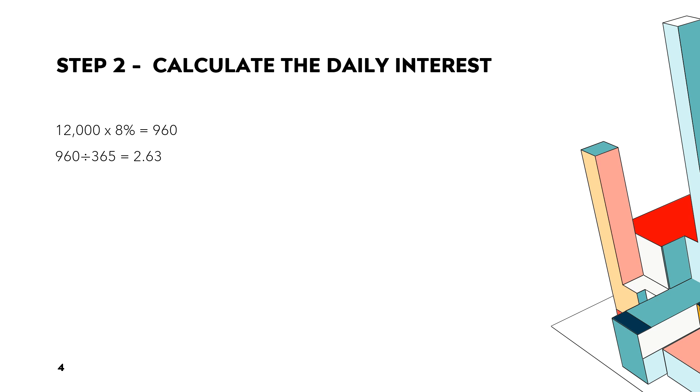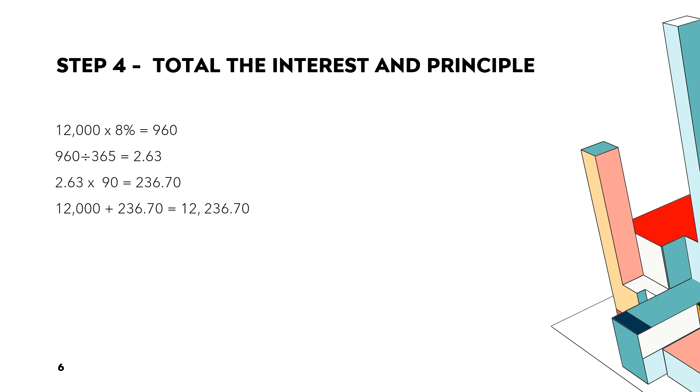So, we said, okay, our daily interest was $2.63. Now, how many days were we going to borrow it? 90 days. So, it was $2.63 times 90, and we got $236.70 of interest for that loan. And then we add the loan. We total the interest and the principal, and we get $12,236.70.